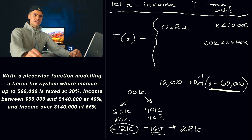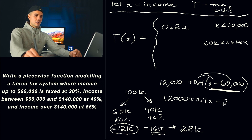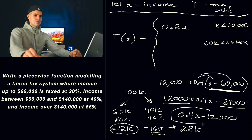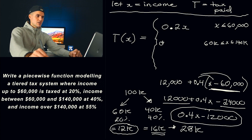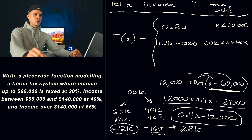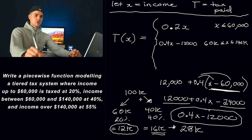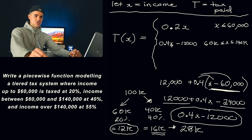Now distribute and simplify the like terms. We have $12,000 plus 0.4x, then 0.4 times $60,000 gives us minus $24,000. Those like terms simplify to negative $12,000. So the second piece is 0.4x minus $12,000, for income between $60,000 and $140,000. We can verify: plugging in $100,000 gives 0.4 times $100,000 equals $40,000, minus $12,000, which is indeed $28,000 — matching our manual calculation.